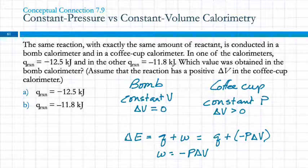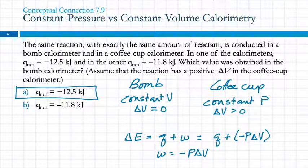So, which one is the bomb? It's the minus 12.5. Because in the bomb calorimeter, no work is done. In the coffee cup calorimeter, work can be done.